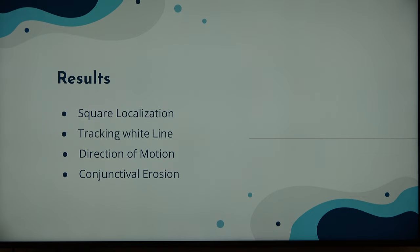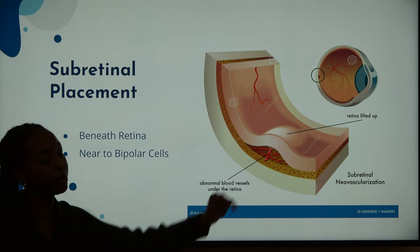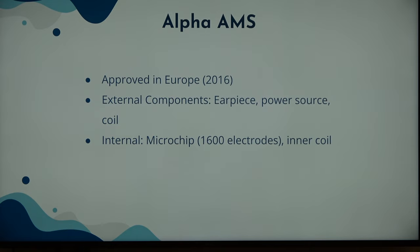Next, subretinal implants. These implants are placed beneath the retina, near the bipolar cells. This pink structure is the retina, and underneath — that's the subretinal layer — is where this implant is placed. An example of a subretinal implant is Alpha AMS, approved in Europe in 2016 and manufactured in Germany. It has external components such as an earpiece that goes behind your ear, a power source, and a coil. It also has internal components including a microchip with 1,600 electrodes — so your pixelated image can now be 1,600 pixels.